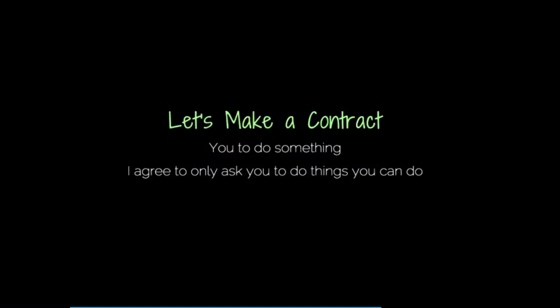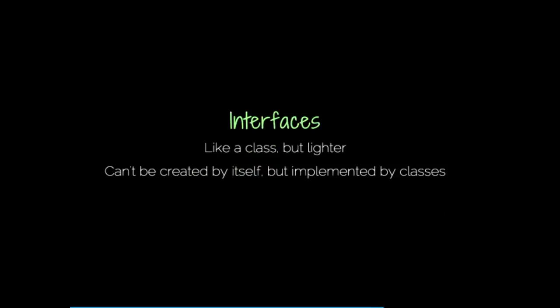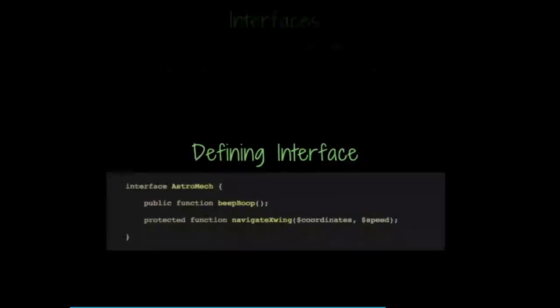As our classes get complicated, let's simplify that. Let's just make a contract. Instead of having this huge family dynasty like some bizarre object soap opera, let's just have something simple. A contract says that you agree to do this. In object-oriented programming, we have a thing that is a contract — that's called an interface. It's like a class, but lighter. It can't be created by itself — you can't create a contract, it's just an agreement. However, the agreement itself is useful. It has to be implemented by people, by other classes.